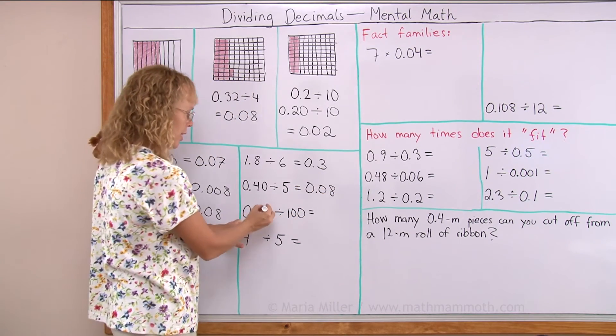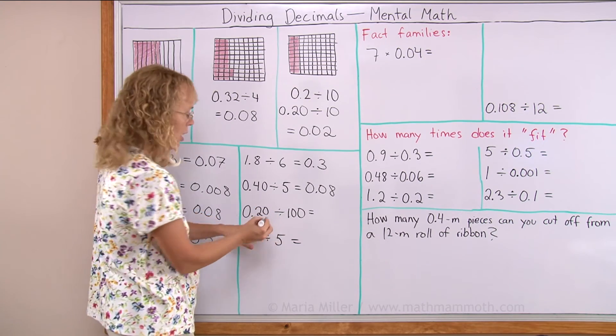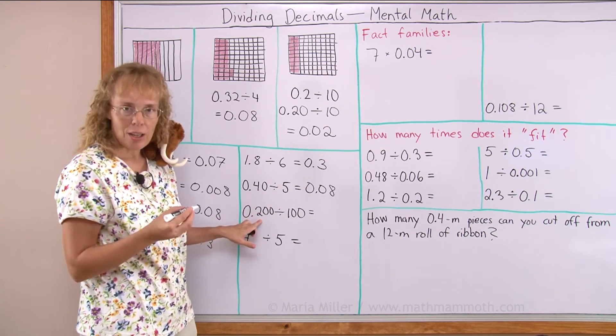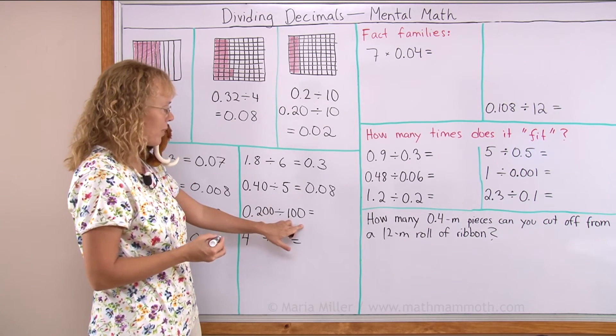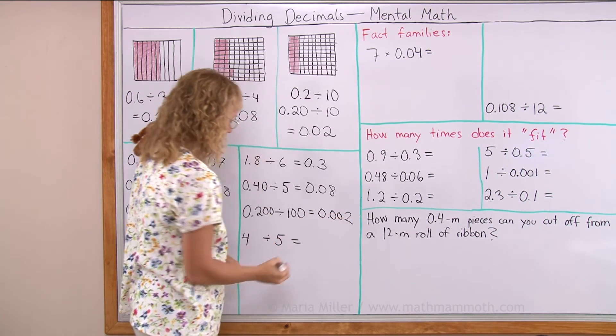Over here I'll do the same. Tag a zero here, but it's still not yet even. Another one. So now I have two hundred thousandths divided by hundred. So I get two thousandths, right?